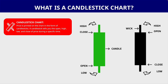So what is a candlestick? Price is printed on the chart in the form of candlesticks. Candlesticks tell you the open, high, low, and close during a given timeframe. Looking at this green candle — a bullish candle — it closed higher than when it opened. A candlestick has two parts: the body, which is the rectangular shape, and the wick or tail at the top and bottom. The top of the wick is the high, the bottom is the low. Since it's a bullish candle, the open is the bottom of the body and the close is the top.